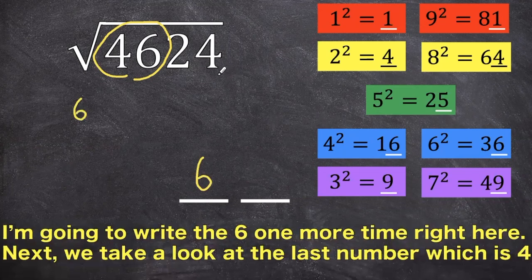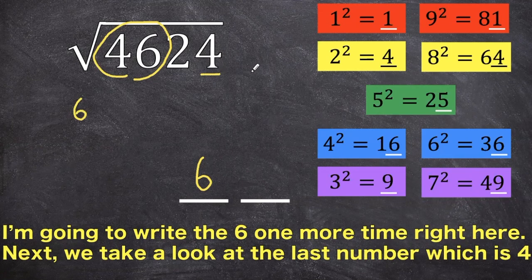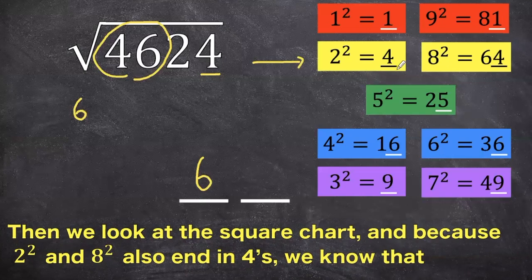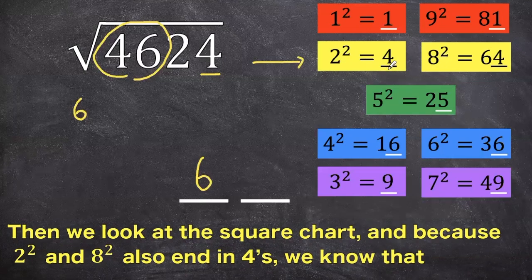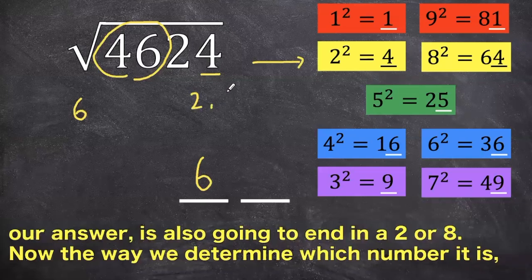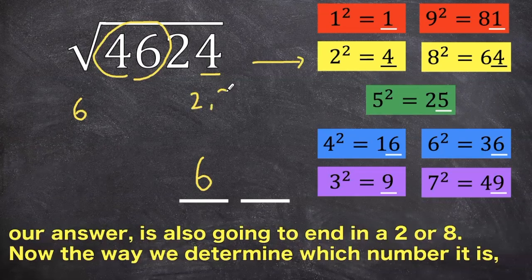I'm going to write the 6 one more time right here, and then next, we take a look at the last number, which in this case is 4, and then we look at our square chart here, and because 2 squared and 8 squared also end in 4s, we know that our answer is also going to end in a 2 or an 8.